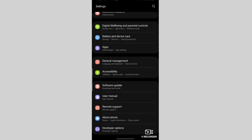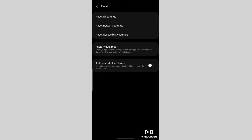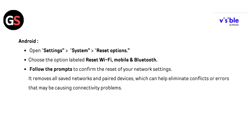On Android, open Settings, go to System, then Reset Options. Choose the option labeled Reset Wi-Fi, Mobile and Bluetooth. Follow the prompts to confirm the reset of your network settings. This removes all saved networks and paired devices, which can help eliminate conflicts or errors that may be causing connectivity problems.